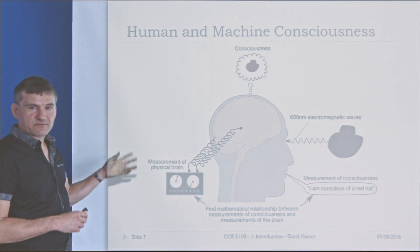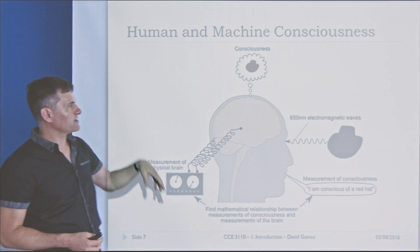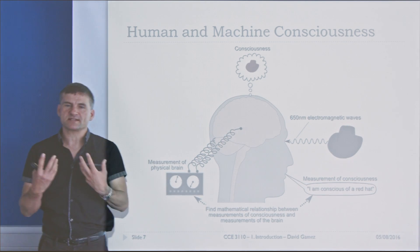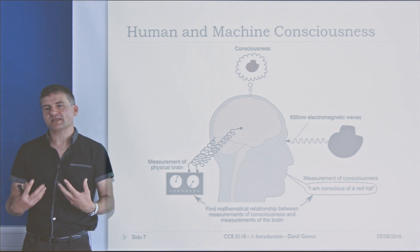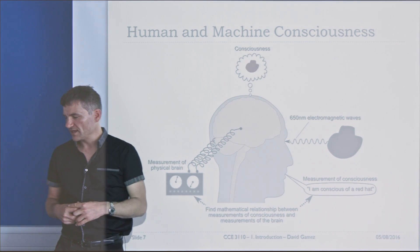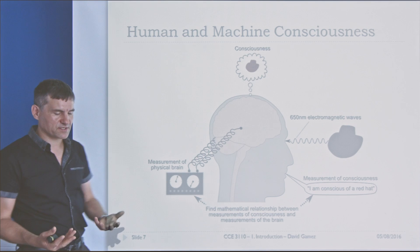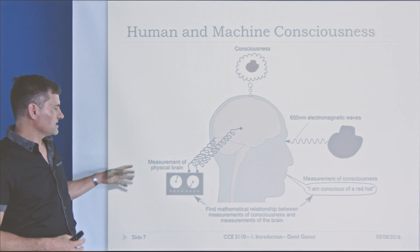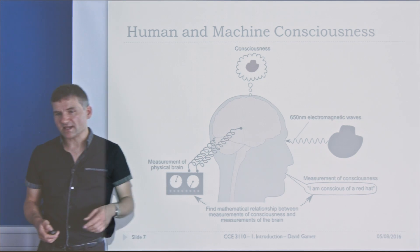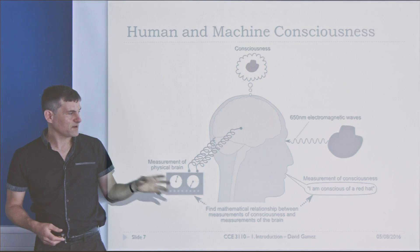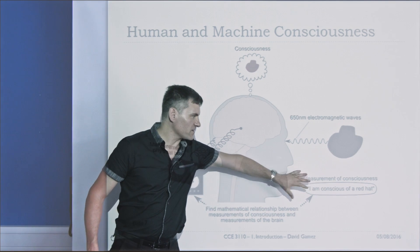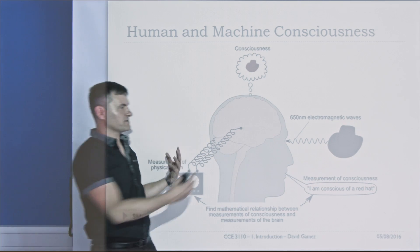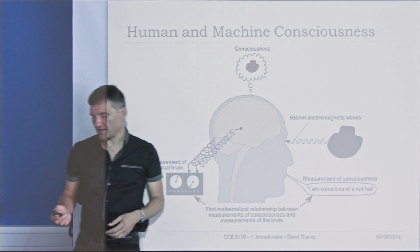For the three years before I came to Middlesex, I was working on human and machine consciousness — trying to understand the philosophical problems that underlie the science of consciousness, how we can measure consciousness, measure the physical world, and look for the relationship between the two. The final picture I ended up with is that we can measure consciousness, measure the brain, and then use machine learning to understand the relationship between them.